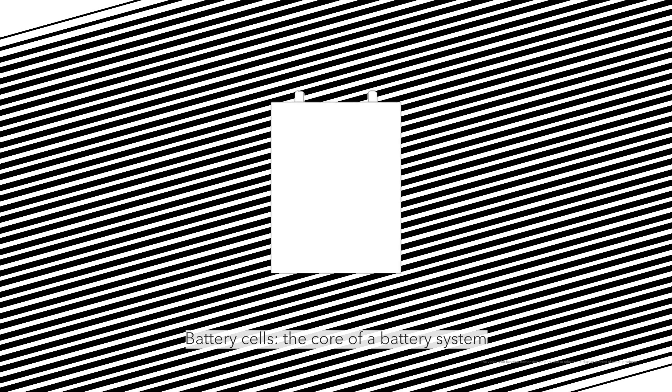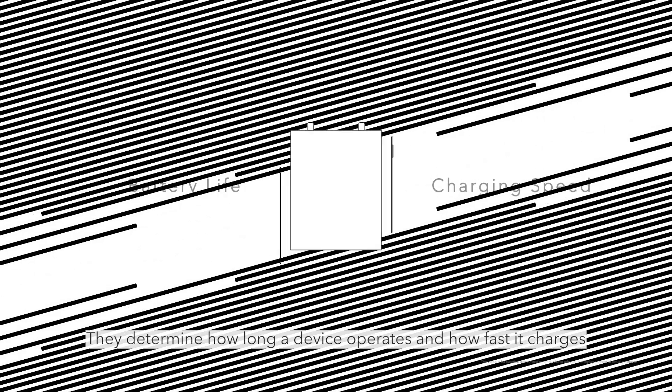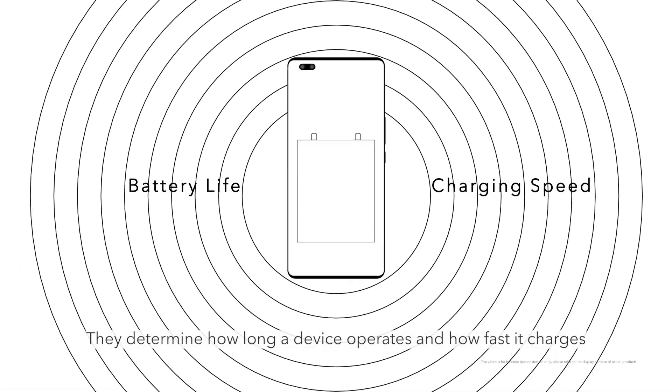Battery cells are the core of a battery system. They determine how long a device operates and how fast it charges.